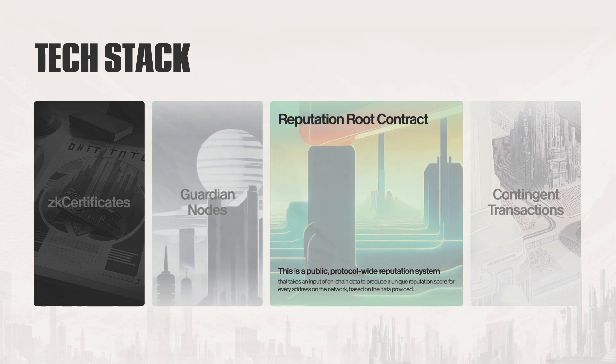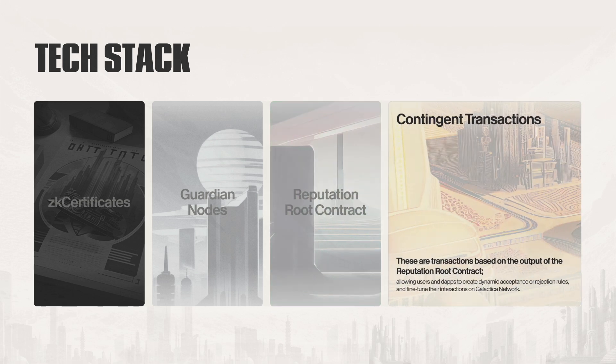Next, we have the Reputation Root Contract. This is a public, protocol-wide reputation system that takes an input of on-chain data to produce a unique reputation score for every address on the network, based on the data provided. Lastly, we have contingent transactions. These are transactions based on the output of the Reputation Root Contract, allowing users and dApps to create dynamic acceptance or rejection rules, and fine-tune their interactions on Galactica Network.